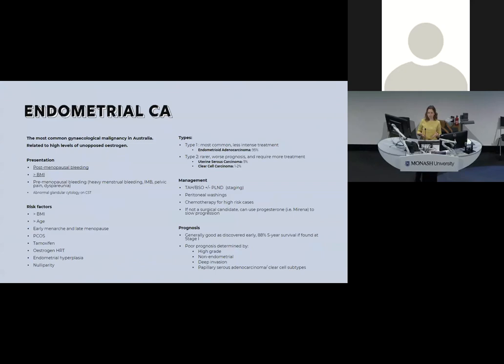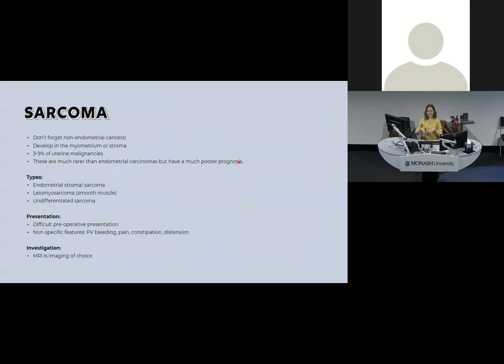Good five-year survival is expected if found early. Poor prognosis indicators include grade 3, deep invasion, papillary serous or clear cell histology. If someone is not a surgical candidate — often due to very raised BMI — a progesterone such as a Mirena can delay cancer progression, though it won't cure it. Non-endometrial uterine cancers account for about 9% of uterine cancers — including endometrial stromal tumours, leiomyosarcoma, and undifferentiated sarcoma — and are harder to pick up as they may not present with PMB. MRI is the investigation of choice for these.